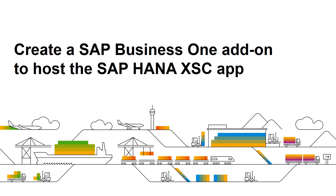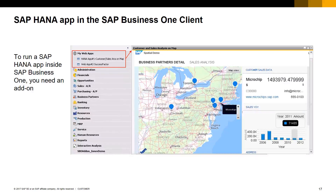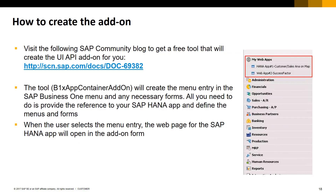In order to open the SAP HANA XSC app into the SAP Business One client, you need to create a SAP Business One add-on as a UI container for the SAP HANA XSC app. The UI API add-on will act as a container to accommodate any web application in SAP Business One client, whether it runs in the XSC engine of SAP HANA or any other web application. To save you having to develop the UI API add-on, you can download a free tool that will create the add-on for you. Follow the link provided pointing to the SAP community. The tool will create the menu entry in the SAP Business One menu and the necessary forms. When the menu is selected by the user, the web page for the SAP HANA app will open in the add-on form. All you need to do is customize the add-on to reference your SAP HANA XSC app and define properties for the menus and forms to be created in the SAP Business One client.